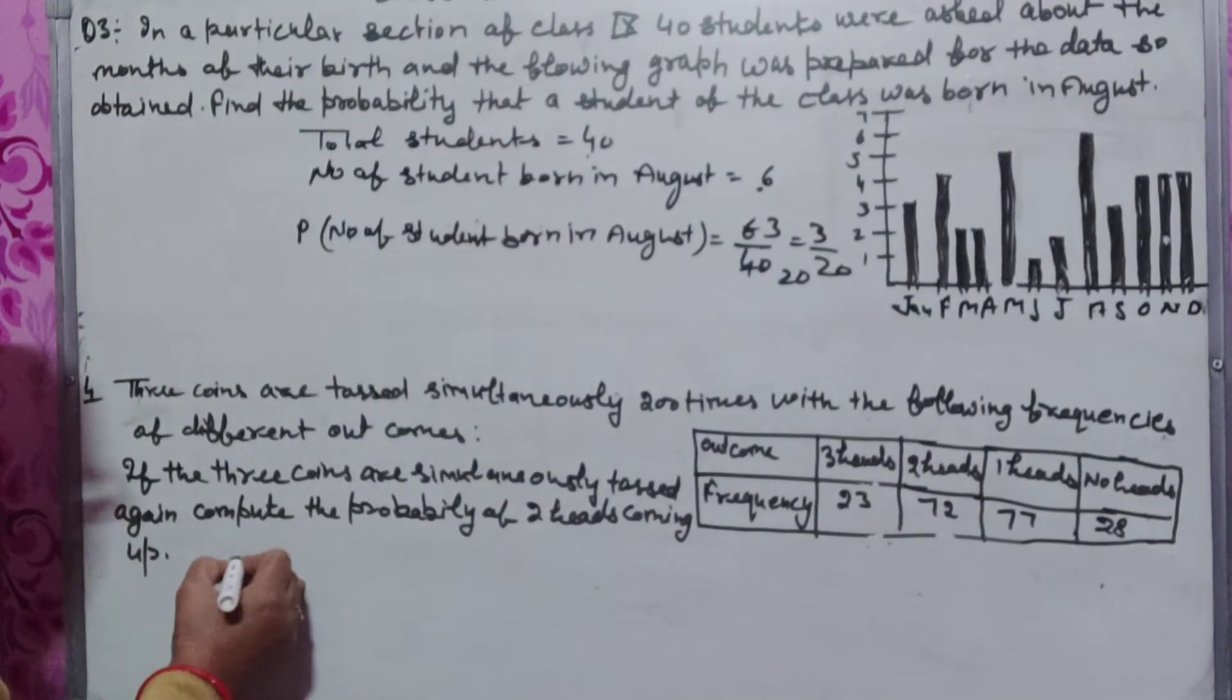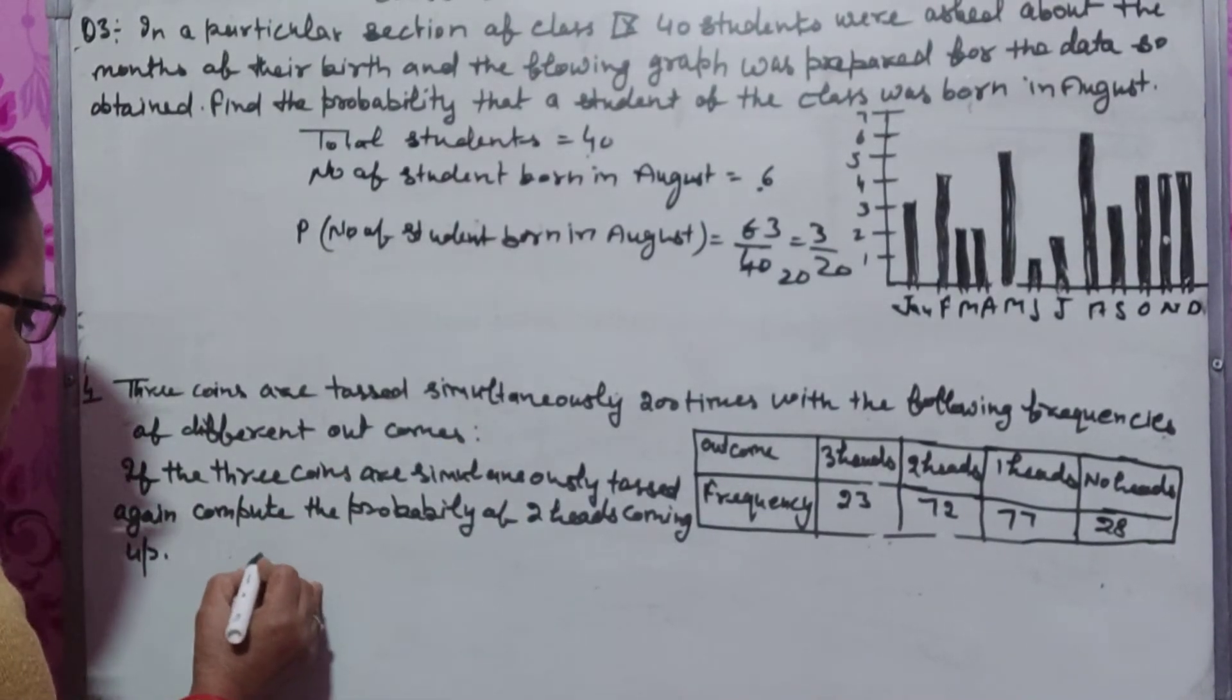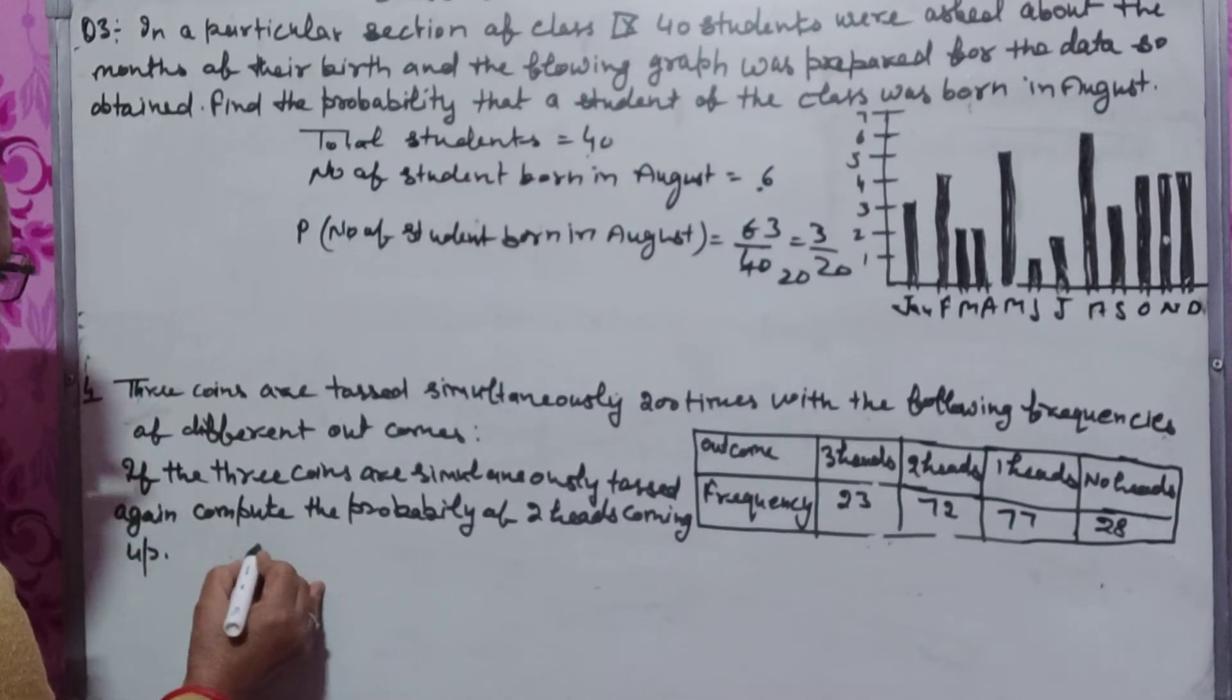Hamein 2 heads ke probability nikalni hai. Hamar paas, variance 2.